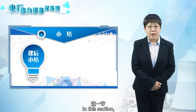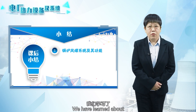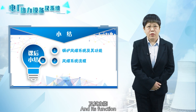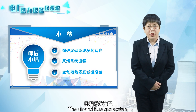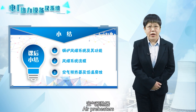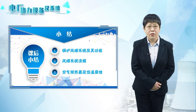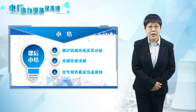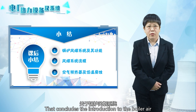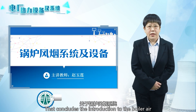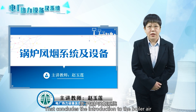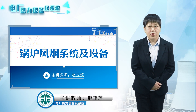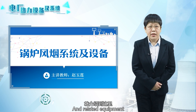In this section, we have learned about the boiler air and flue gas system and its function, the air and flue gas system process, air preheaters, and low-temperature corrosion, among other topics. That concludes the introduction to the boiler air and flue gas system and related equipment. Thank you all.